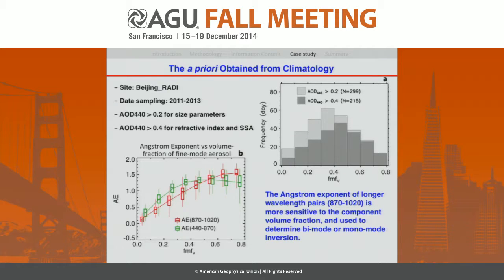This shows the frequency of those inversions as a function of fine-mode fraction. Overall, aerosol in Beijing is in most cases mixed by both fine and coarse mode.